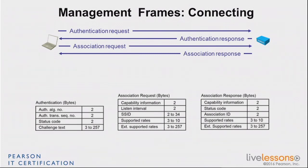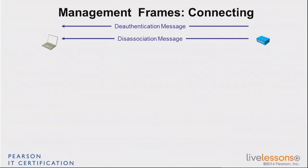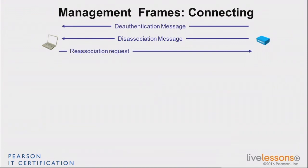In the association response, the AP states what it can do, your status — associated or not — and your assigned ID. The AP also communicates its own supported rates because it may differ from the client's, so they adjust to a common set of rates they both support. Once connected, you can be disconnected in a few forms: a de-authentication message, which drops you entirely, or a disassociation. Since authentication comes first and then association, if you are disassociated you are still authenticated but must re-associate. If de-authenticated, you must re-authenticate and re-associate. You can also send a re-association request when returning, receiving a re-association response.